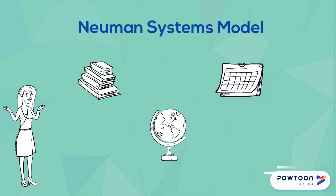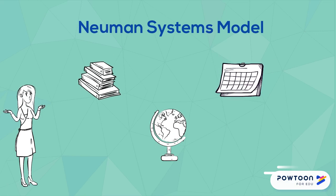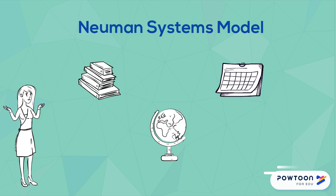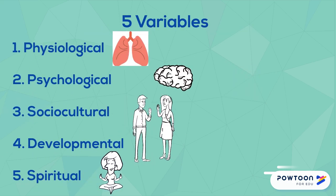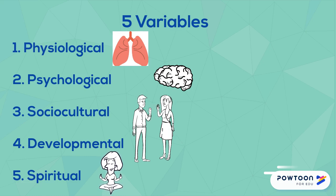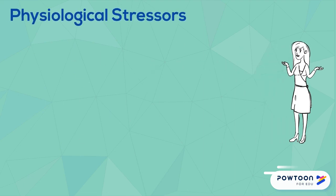Using the Neuman Systems Model, the medical staff was able to identify and acknowledge other stressors in the patient's life that she might face when going home with the newborn. The Neuman Systems Model is an operating framework designed to guide caregivers and administrators in helping those in their charge manage stressors. There are five variables that play a role: physiological, psychological, sociocultural, developmental, and spiritual.